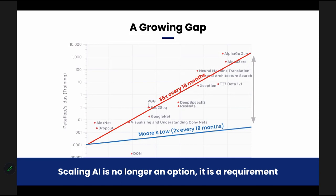That led us to start Ray, the open source project to make it easy to build scalable Python and machine learning applications. Since we started the project, it's been adopted by a tremendous number of companies: companies like OpenAI, which use Ray to train their large models like ChatGPT; companies like Uber, which run all of their deep learning and classical machine learning on top of Ray; companies like Shopify, Spotify, Instacart, Lyft, Netflix, and ByteDance, which use Ray for their machine learning infrastructure. Companies like Ant Group, which makes Alipay, use Ray across the board for fraud detection, online learning, detecting money laundering, graph processing, and stream processing.